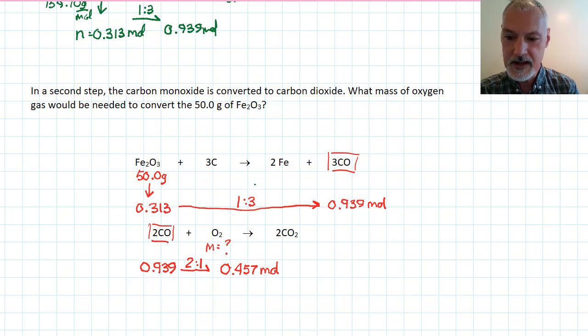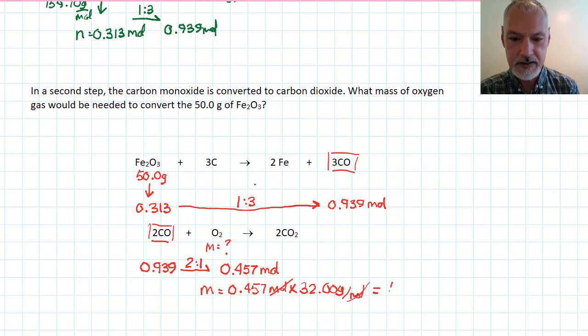And my last step now is to take this and convert it into the mass of oxygen. To do that requires the mass is our number of moles, 0.457 moles. And multiplying it now by the molar mass of oxygen. Remember, it's O2, not just O. 32 grams per mole. Moles will cancel. And I arrive at 15 grams.